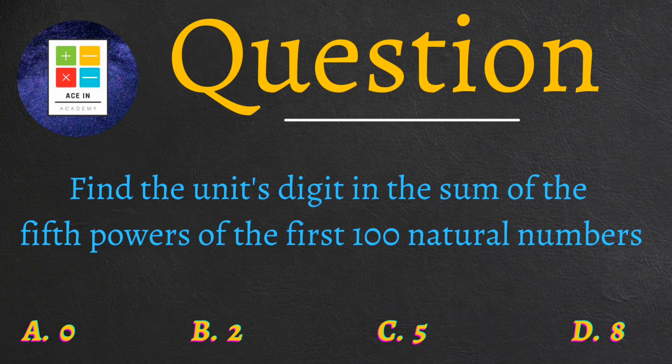We are provided four options for this question: option A is 0, option B is 2, option C is 5, and option D is 8. This is our question from the topic of number system.